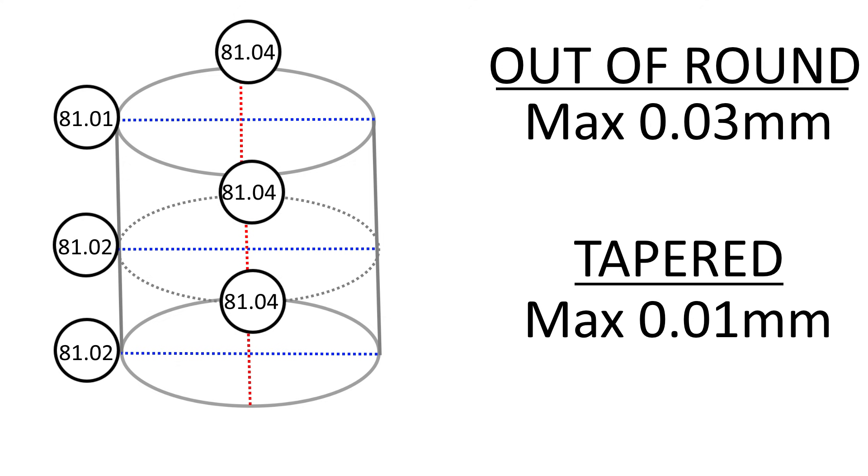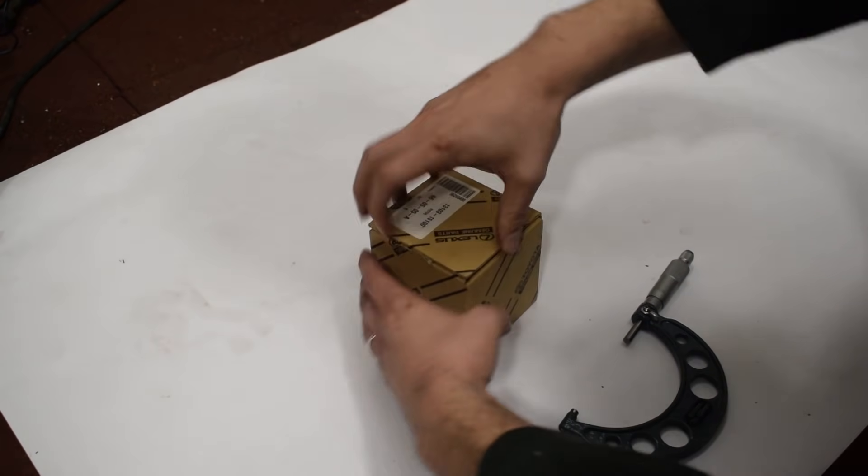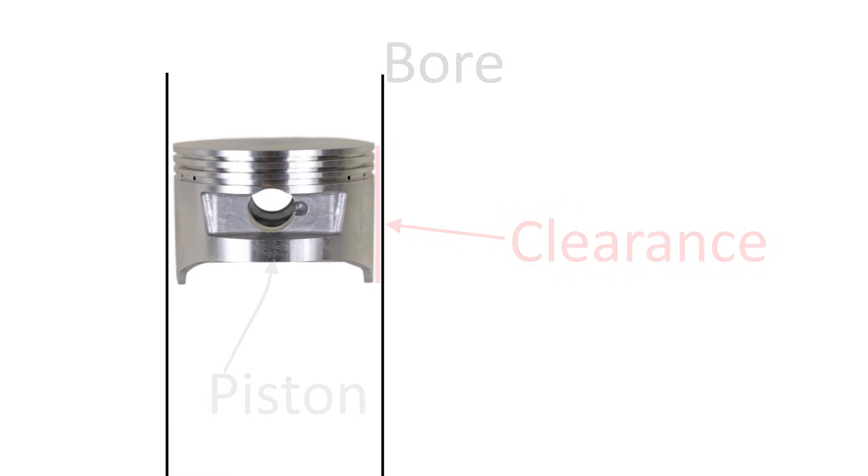Kinda sad that cylinder number 3 is such a mess. But now let's imagine that we don't want to reuse this bore, we can't tolerate this slight out of round condition and we simply want brand spanking new bores. How do we determine the size of our new bores? Well to do that we need to measure our oversized pistons.